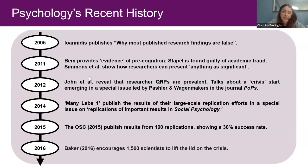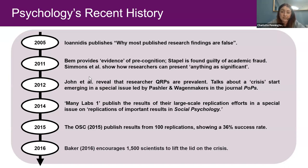Also in 2011, metascientists Simmons and colleagues showed how researchers can present anything as significant using analytical flexibility and non-transparent reporting — you can take a dataset showing nothing and present findings as significant. This got psychologists and the wider field talking and debating. In 2012, John and colleagues revealed that questionable research practices are very prevalent in the field, and talks about a crisis started emerging in a special issue of Perspectives on Psychological Science by Pashler and Wagenmakers.